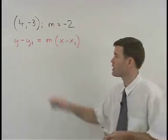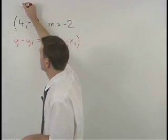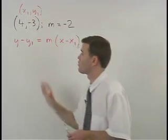Remember that our point, in this case 4 negative 3, represents x1, y1 in our formula.